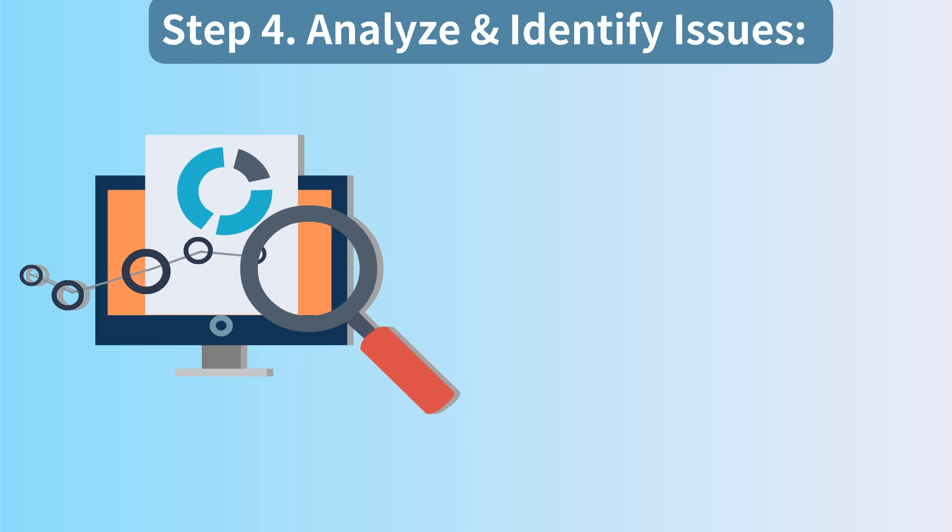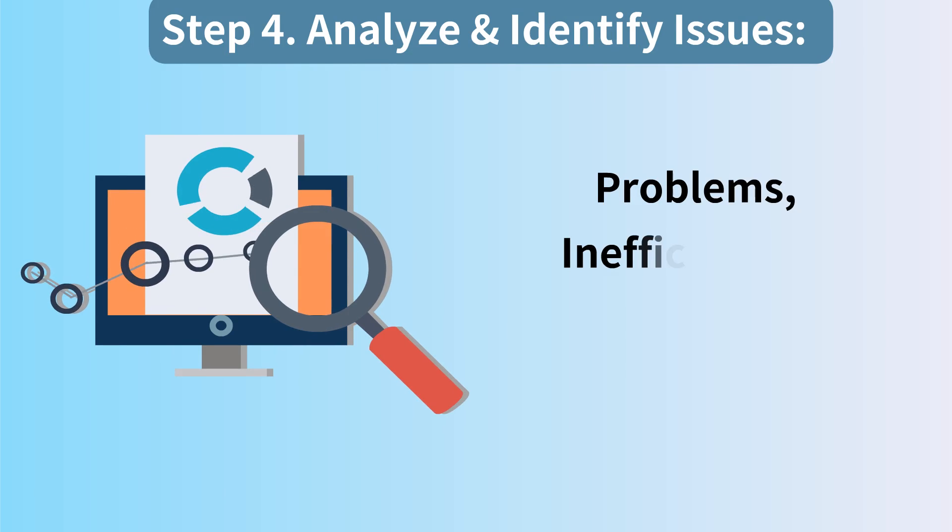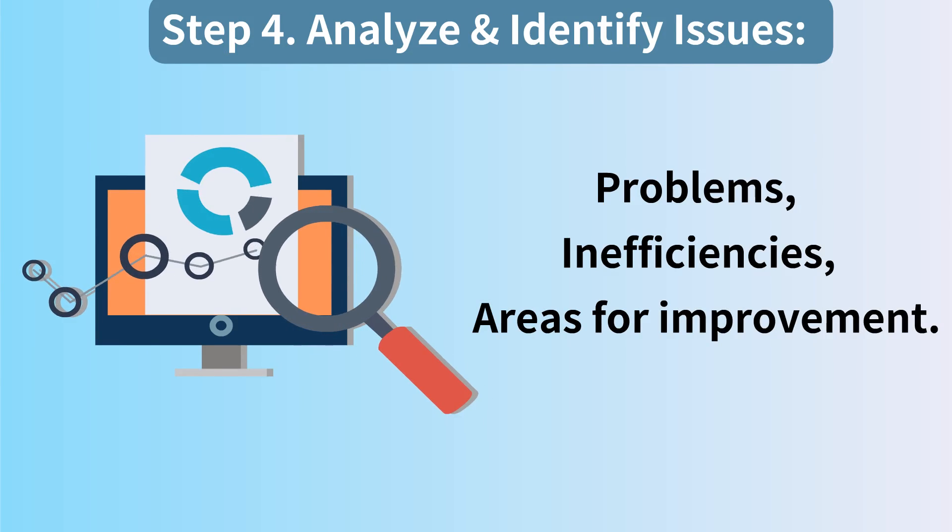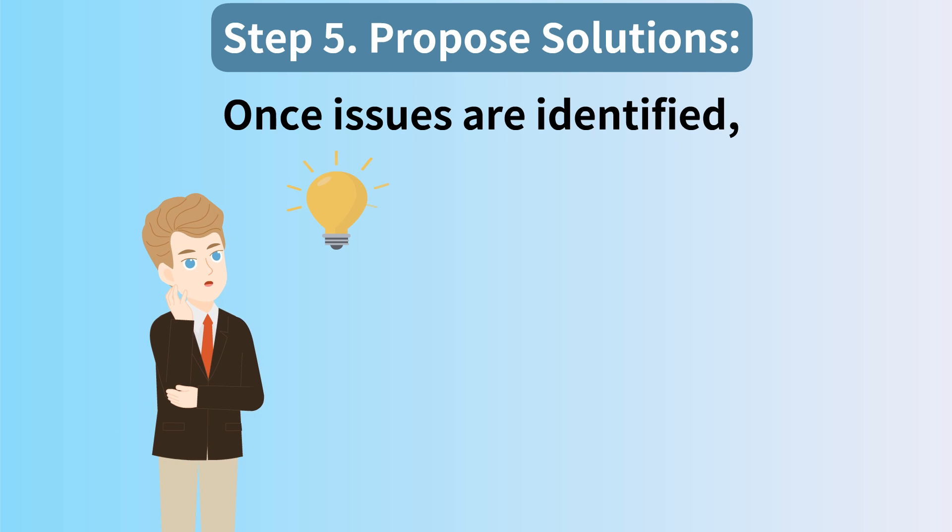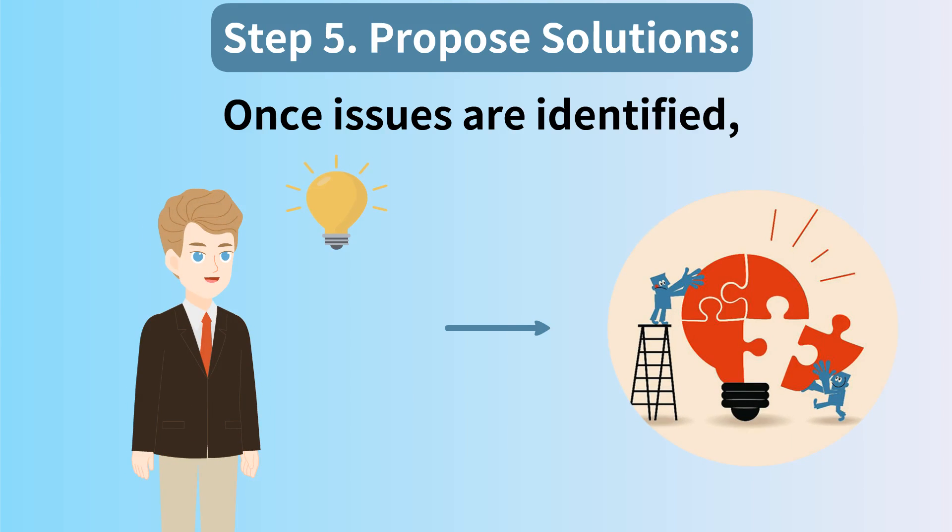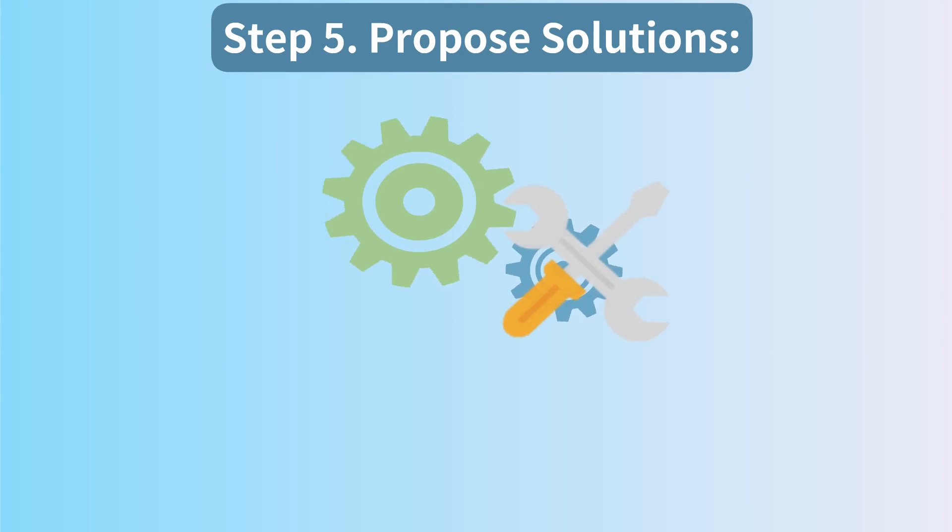Step 4: Analyze and identify issues. Examine the data and models to identify any problems, inefficiencies, or areas for improvement. Step 5: Propose solutions. Once issues are identified, brainstorm and propose solutions to address them. Consider how changes in one part of the system might affect other parts.